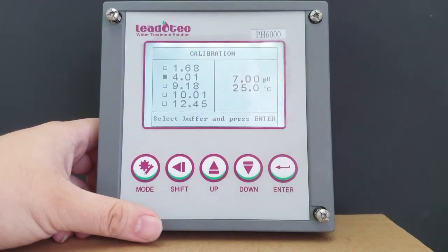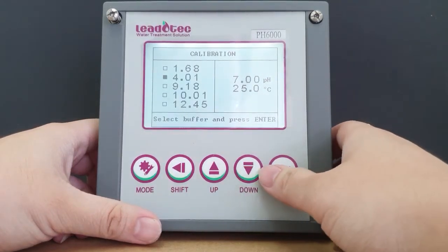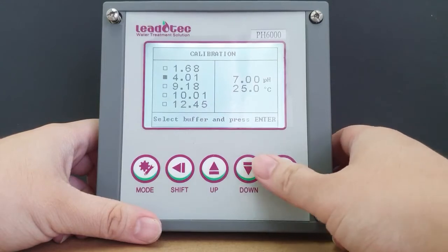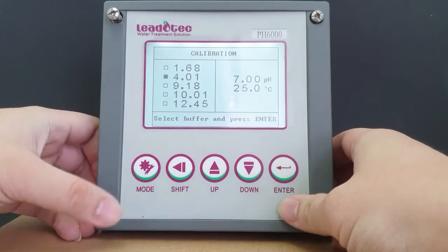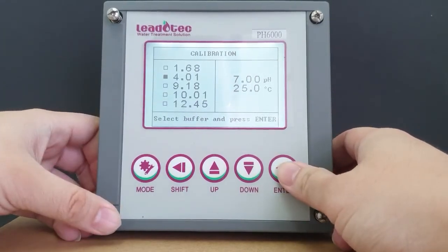Now I'm going to rinse off the sensor and immerse it in a pH 4 buffer, 4.01. So now that the cursor is at 4.01, I'm going to press enter to proceed.